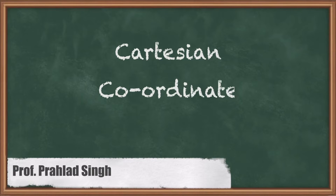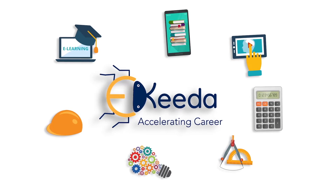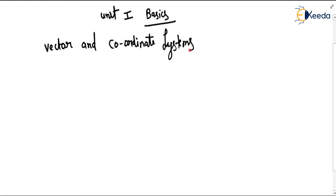Hello students. In this video we will discuss about coordinate systems. In this unit we will start with vectors and coordinate systems. We will study three types of coordinate systems: Cartesian coordinate system, cylindrical coordinate system, and spherical coordinate system.